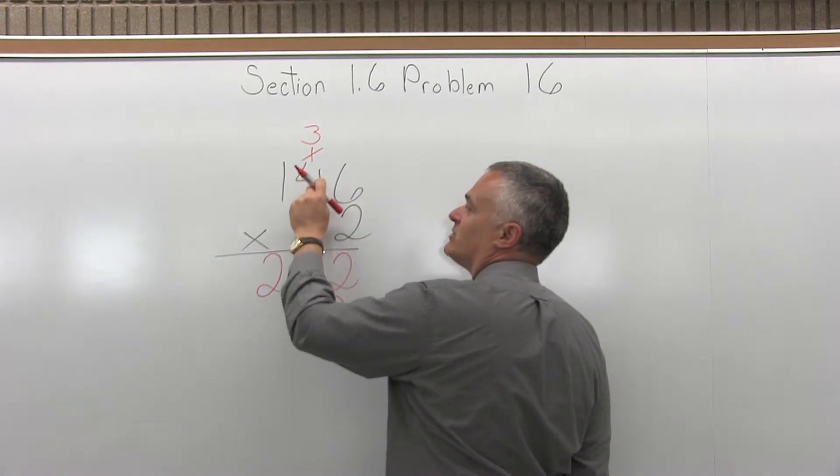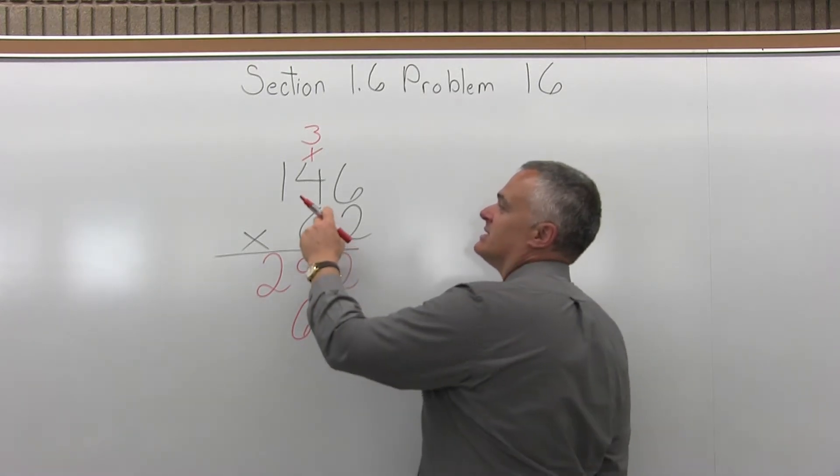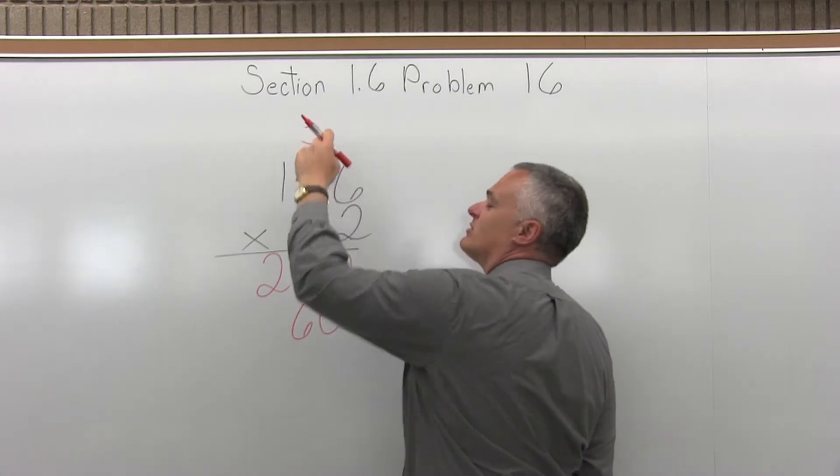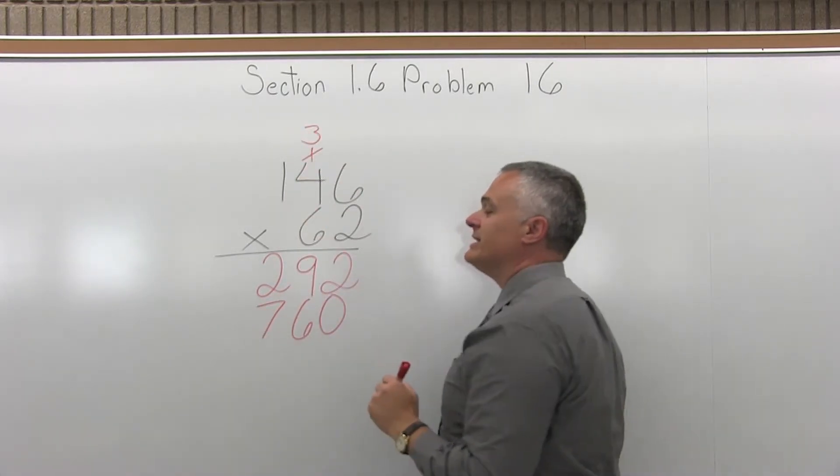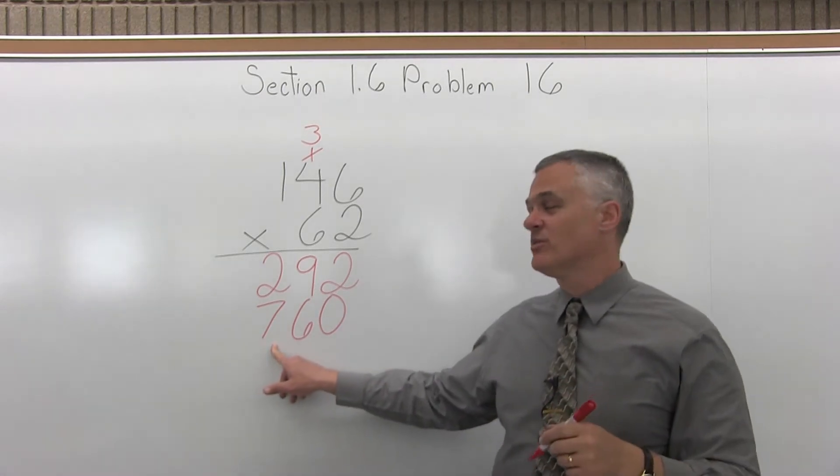Now I'll multiply 6 times 4 and add the 3 to the result that I carried from the previous multiplication. 6 times 4 is 24, and then 24 plus 3 more is 27. So for 27, I'm going to have to carry again. So you put the 7 from the 27 in the position that we're filling out.